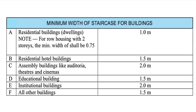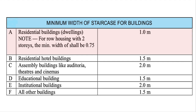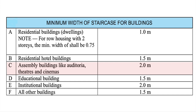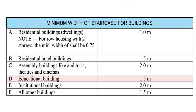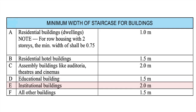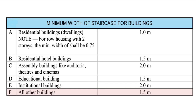Here I am going to explain the minimum width of staircase which should be followed. For residential buildings, the minimum width should be 1 meter. For row housing with two stories, the minimum width shall be 0.75 meter. For residential hotel buildings, the width of stairs should be 1.5 meter. For assembly buildings like auditoriums, theaters, and cinemas, the width shall be 2 meters. For educational buildings, the width should be 1.5 meter, and for institutional buildings it should be 2 meters.